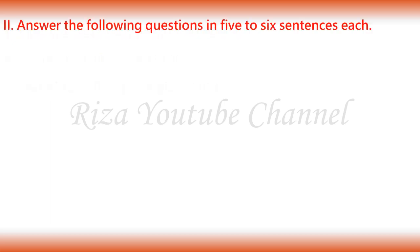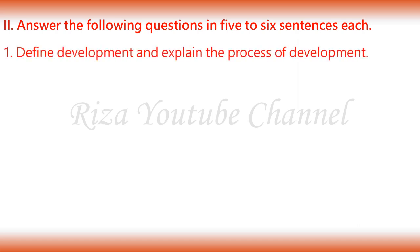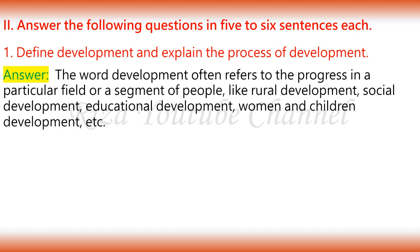Answer the following questions in 5-6 sentences each. 1. Define development and explain the process of development. The word development often refers to the progress in a particular field or a segment of people, like rural development, social development, educational development, women and children development, etc. An economy continuously attempts to progress providing for more and more quantities of goods and services to the people and improving their well-being.